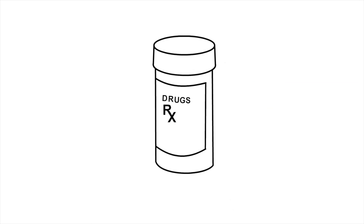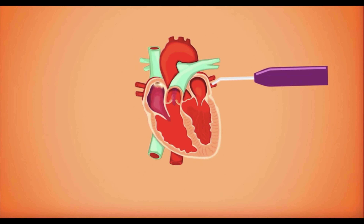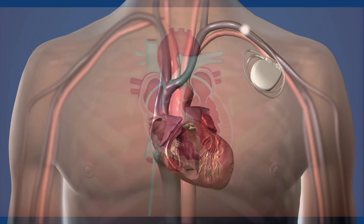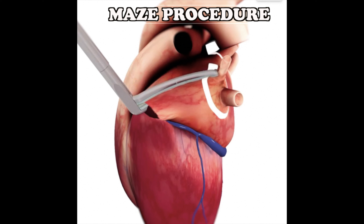When medications do not work to correct or control atrial fibrillation, or when medications are not tolerated, a procedure may be necessary to treat the abnormal heart rhythm. Options include electrical cardioversion, pulmonary vein antrum isolation procedure, ablation of the AV node followed by pacemaker placement, or surgical ablation such as the Maze procedure or minimally invasive surgical treatment.